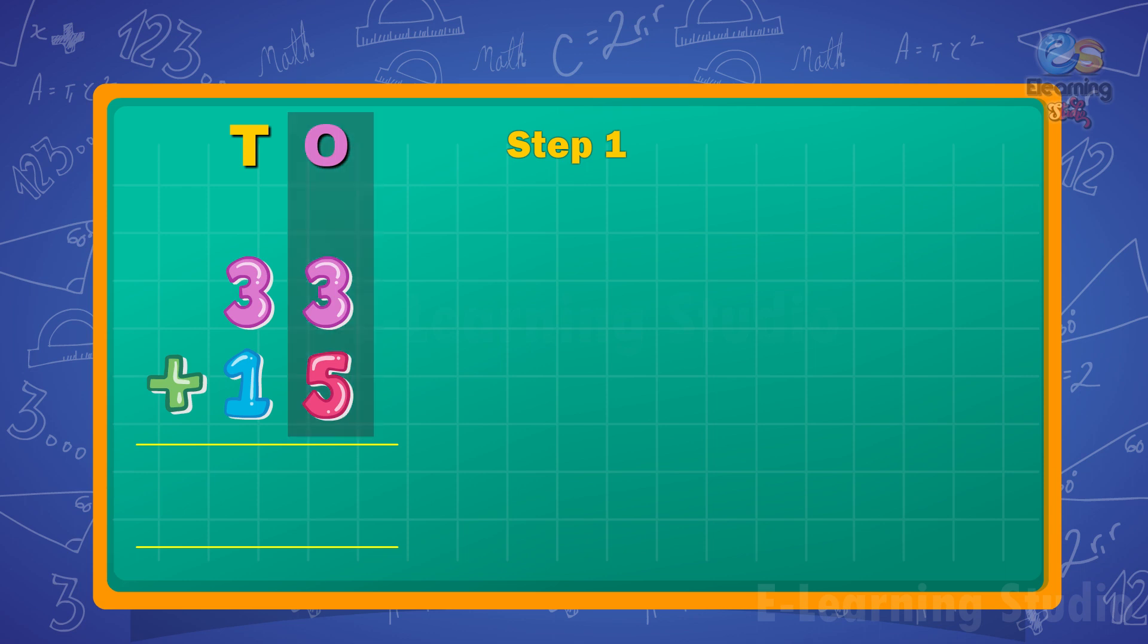add the ones. 3 plus 5 equals 8. Write 8 under the ones column. Step 2: Next,